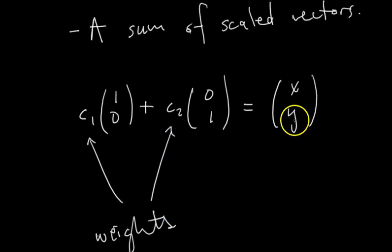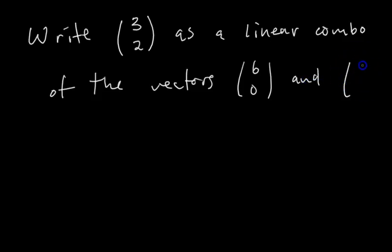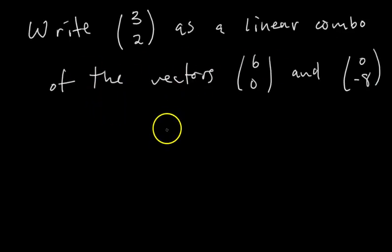So again, you say x, y, this vector x, y, is a linear combination of the vectors 1, 0 and 0, 1, where the weights are C1 and C2. So now that we know what a linear combination is, let's just do one simple example problem. I'm hoping this series can be very exercise-driven, like example problem-driven, because like I said, it's kind of like a virtual recitation. So let's say the question is, write the vector 3, 2, as a linear combination of the vectors 6, 0 and 0, negative 8. How can we do this? Pause the video and try it if you want to.